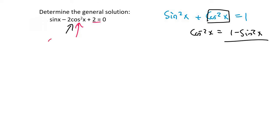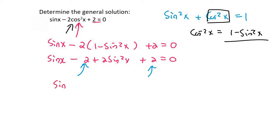And so your equation is now going to become sin x minus 2, then in brackets, 1 minus sin squared x plus 2 equals 0. Then we simply go ahead and simplify. So it's minus 2 plus 2 sin squared x plus 2 equals to 0. And what's really nice is that this minus 2 and this plus 2 cancel out. And so we're left with sin x plus 2 sin squared x equals to 0.